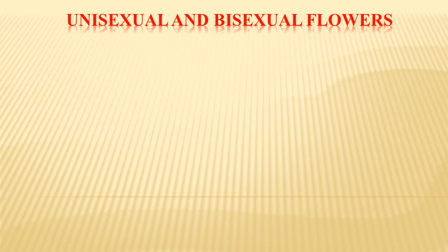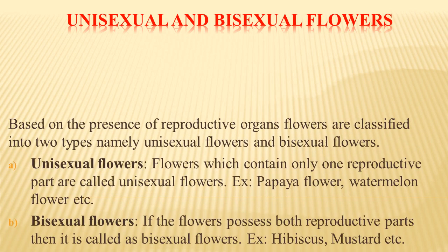Based on the presence of reproductive organs, flowers are categorized into two types: unisexual flowers and bisexual flowers. Unisexual flowers contain only one reproductive part — either pistil or stamen. Examples of unisexual flowers are papaya, watermelon, and datura.